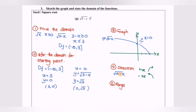Now refer to the diagram and determine the range. The range is the set of values for y. The minimum value of y is 0 and the maximum value is positive infinity, so the range will be 0 until positive infinity.